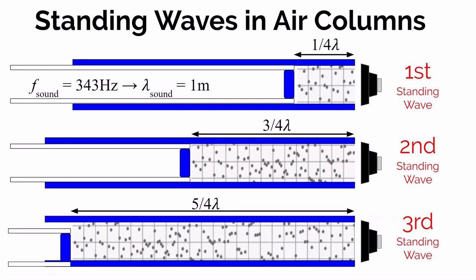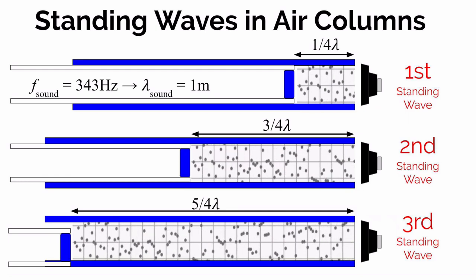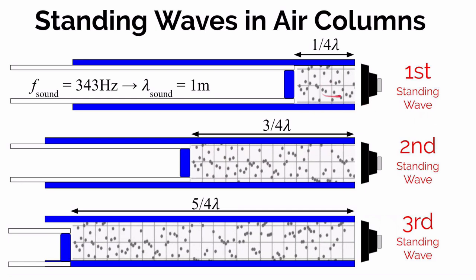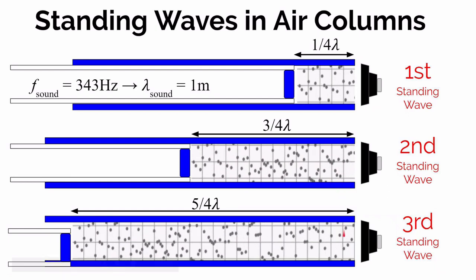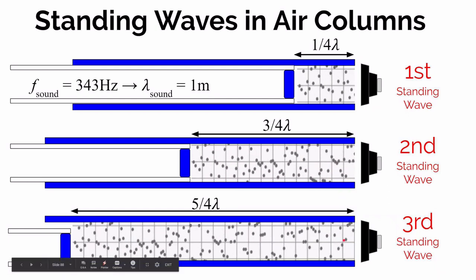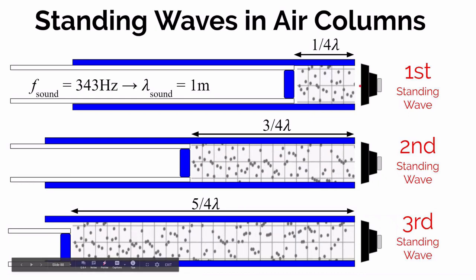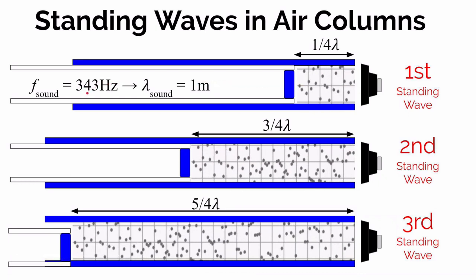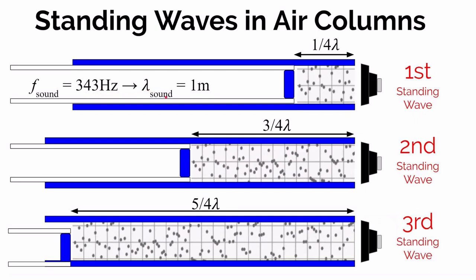Now we know something quantitatively about what's going on to create a standing wave inside a column of air with one open end and one closed end: one-quarter of a wavelength for the first standing wave, three-quarters for the second, and five-quarters for the third. The speaker is vibrating at 343 Hz, producing a sound wave with a one-meter wavelength, and those waves bounce off the back and reflect.